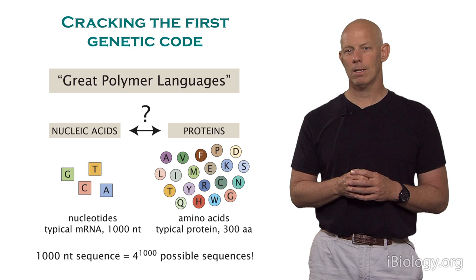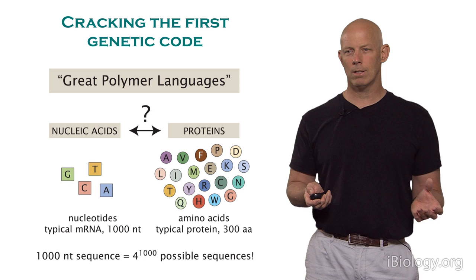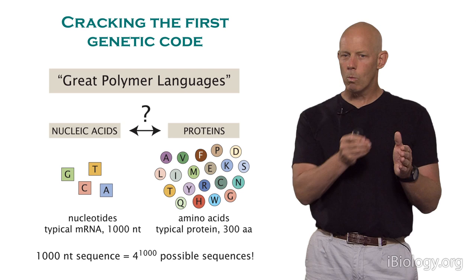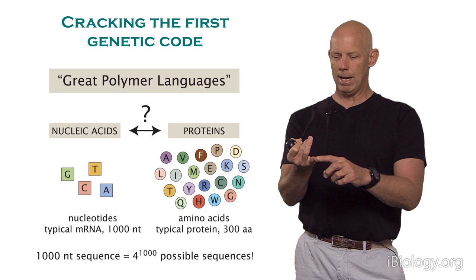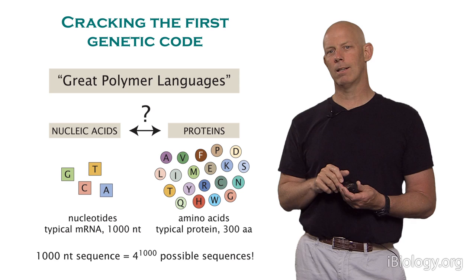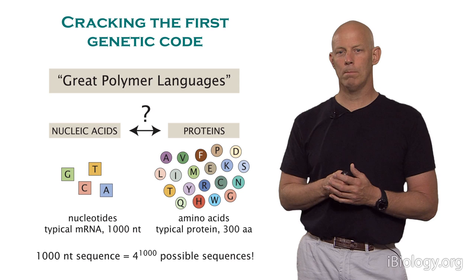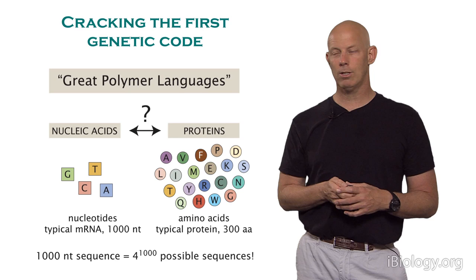Going back to the 1960s, I want to tell you about what I think is one of the greatest experiments ever done in any science, done by Marshall Nirenberg. It has to do with cracking the genetic code. After the elucidation of the structure of DNA by Watson and Crick in 1953, there was a 10- to 15-year rush to figure out what the sequence of letters A, T, G, and C signifies. We know there are four nucleotides, and a typical protein has on the order of 300 amino acids. If it takes three nucleotides to code for each amino acid, that means a typical nucleotide sequence has around 4 to the power of 1,000 different possibilities — a huge combinatorial space.